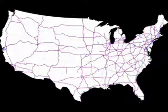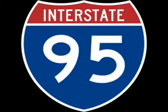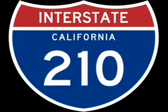The lower numbers are on the south and the west. The system is designed with three-digit numbers as well, with the first digit designating a spur or a loop. So if you're on the 95, you have an odd number — it runs north-south — and the higher number is on the east, and this goes along the east coast.